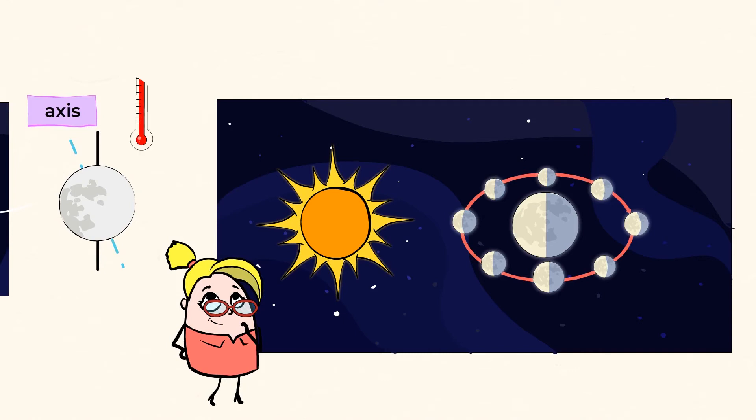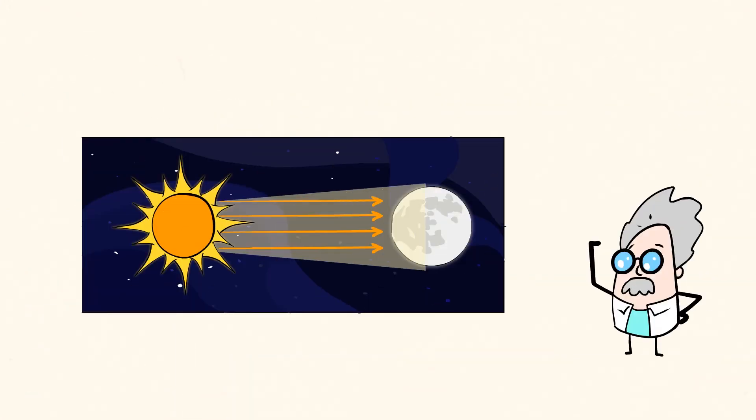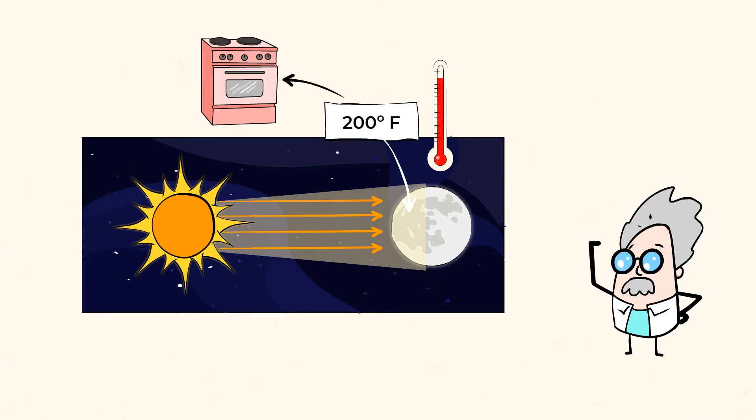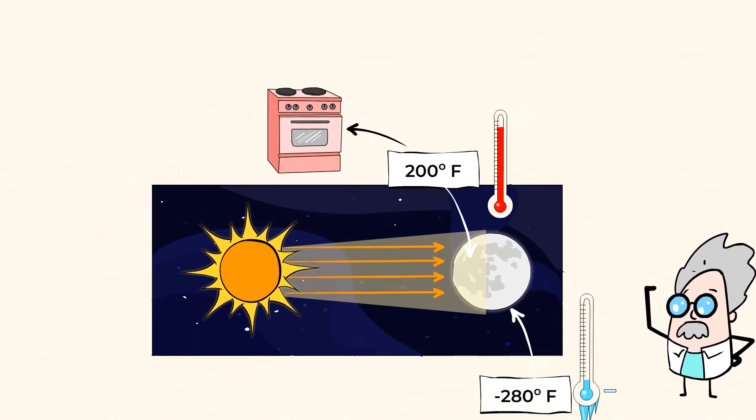The temperature on the moon goes from super hot to very cold. The side of the moon that gets sunshine can be over 200 degrees Fahrenheit. That's like an oven. And on the other side of the moon that gets no sunlight, it can be negative 280 degrees Fahrenheit. Brrrr.